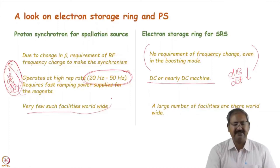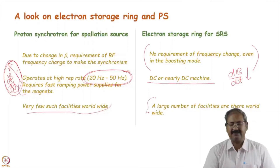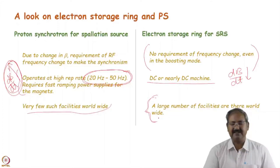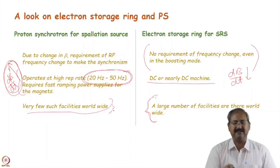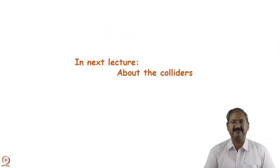Very few spallation source facilities are presently operating: SNS at Oak Ridge (USA), ISIS (UK), J-PARC (Japan), one recently commissioned in China, and the European Spallation Source under construction. In contrast, synchrotron radiation sources number in the hundreds worldwide. There is therefore much larger operational experience with electron machines. We have covered the type of proton machine needed for a spallation neutron source and the differences from electron machines. In the next lecture, we will discuss another class of accelerators known as cyclotrons.